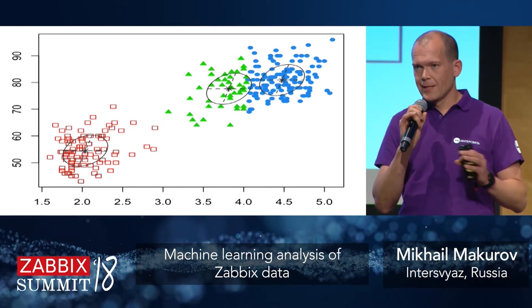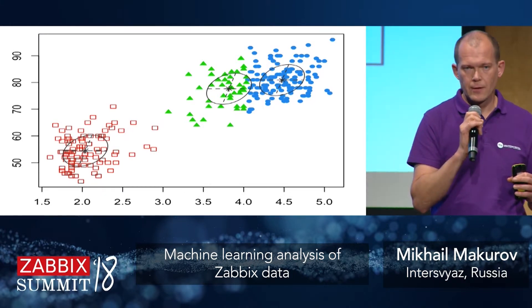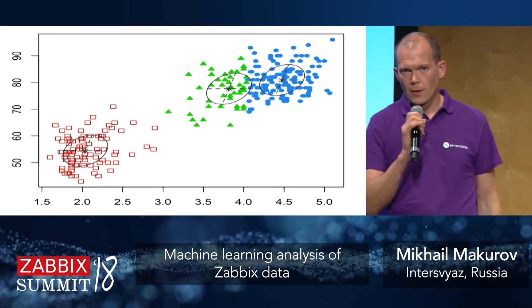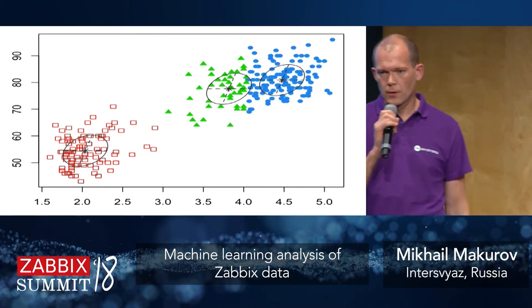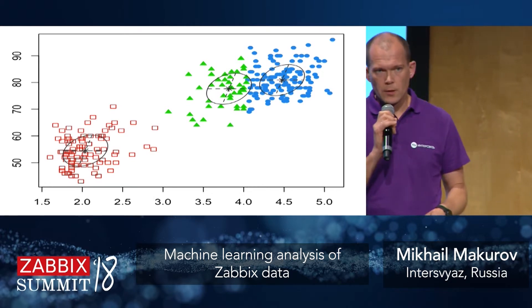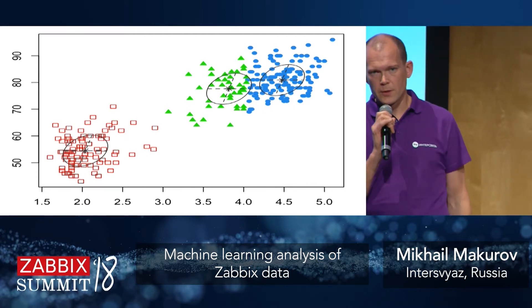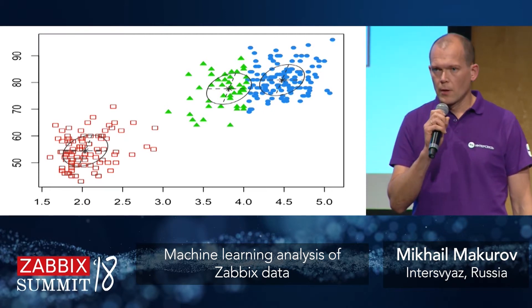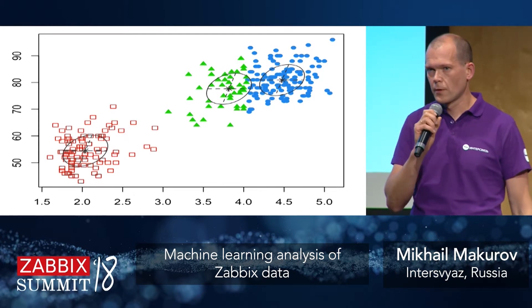Secondly, machine learning gave us a tool to cluster problems by their probability and similarity, so we could group and visualize them as clusters and attend to fixing the most noisy ones first, improving the efficiency of dealing with and fixing problems. To summarize, I'll share a few abstracts and lessons we learned dealing with machine learning over the last year.